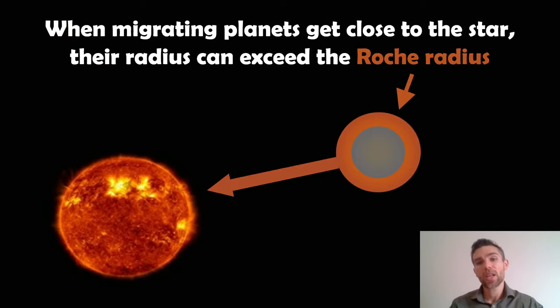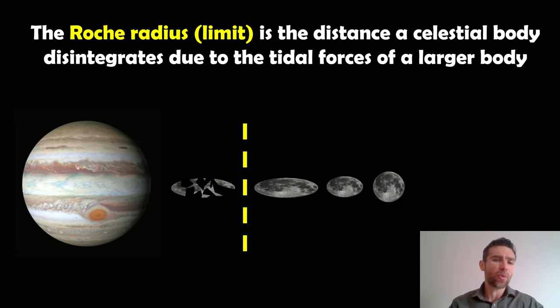The next mechanism could be due to Roche lobe overflow. When migrating planets get close to the star, their radius can actually exceed the Roche radius or the Roche limit. The best way to explain this is with moons. The Roche radius, the Roche limit, is the distance that a smaller object like a moon can get to a larger body before it disintegrates due to tidal forces. Once it gets close enough, the tides are so great from the star or the planet that it gets pulled apart.